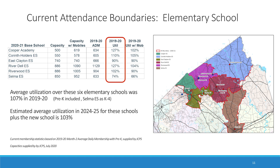These 2019 numbers include pre-K students, and Selma is included as a K-4 school in 2019. It is worthwhile to note that the average utilization over these six schools was 107 percent last year. The estimated average utilization in five years is expected to be 103 percent, including the capacity of the new school.